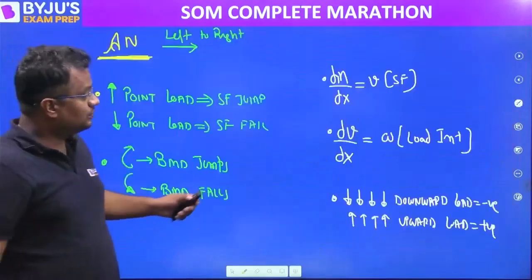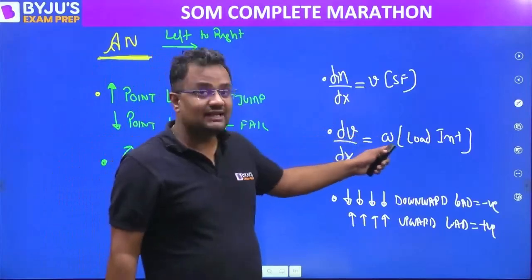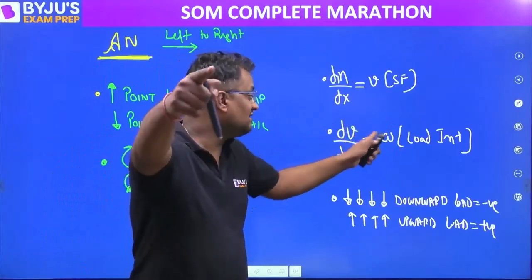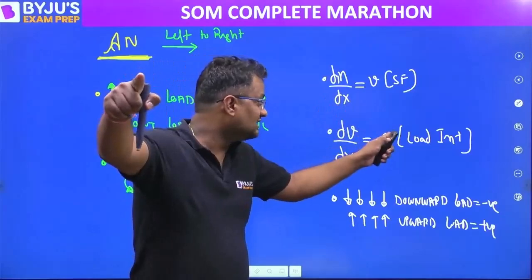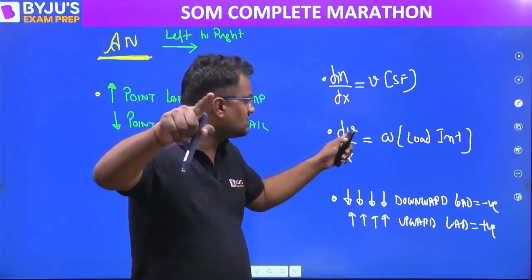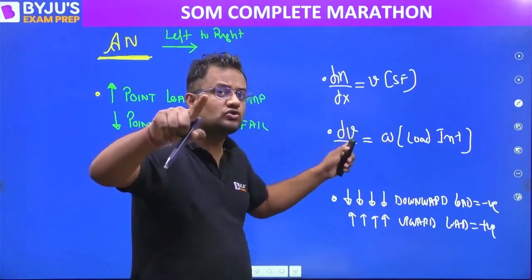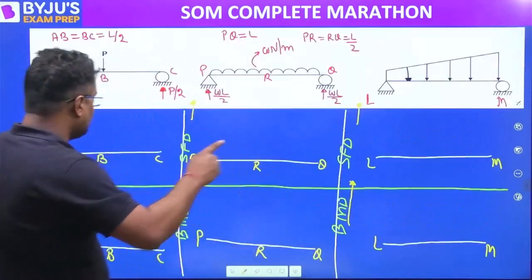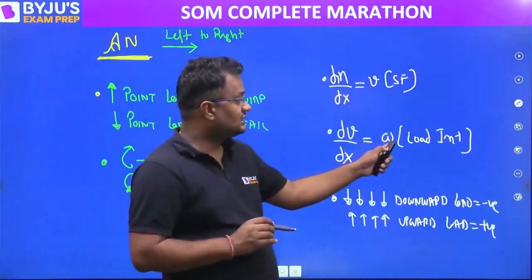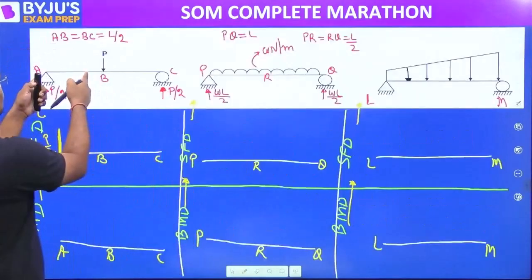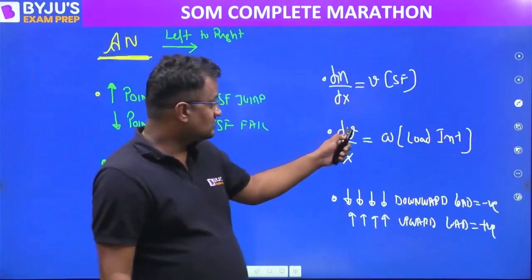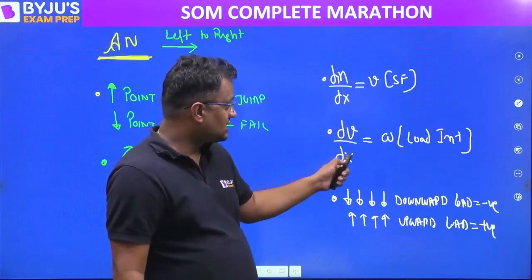From A to B, load intensity is zero. Since dV/dx equals load intensity, and load intensity is zero, that means V is constant — because the differentiation of a constant is zero. So dV/dx is zero, meaning shear force is constant from A to B.